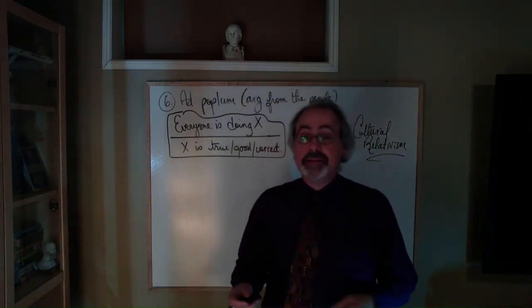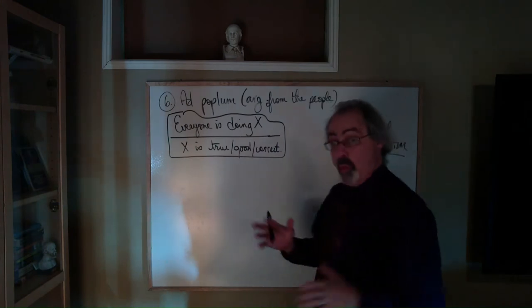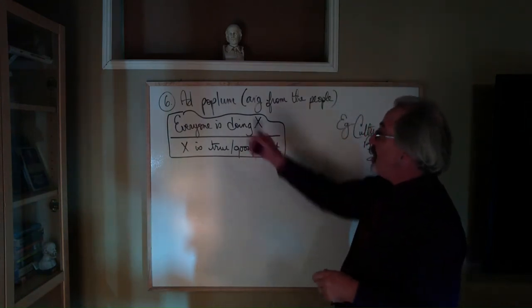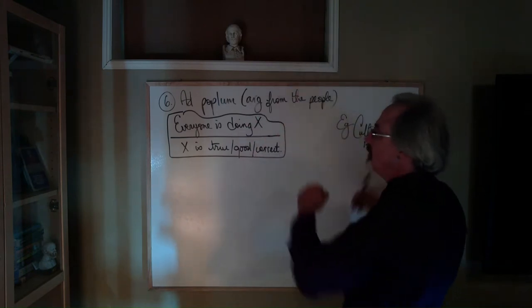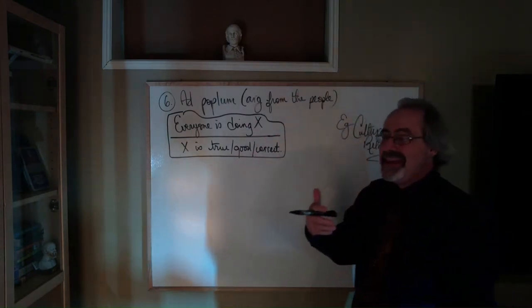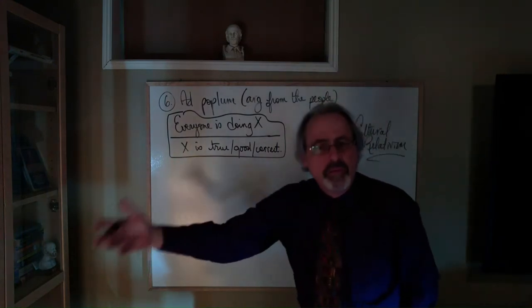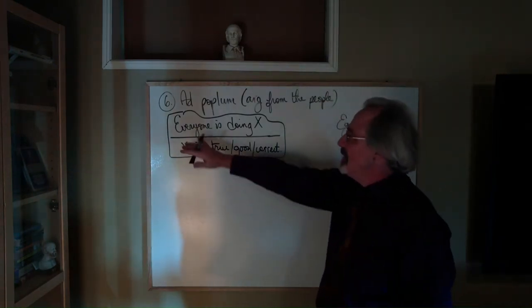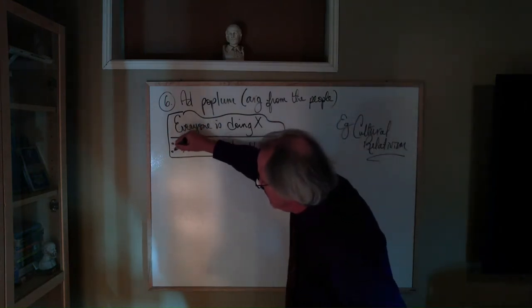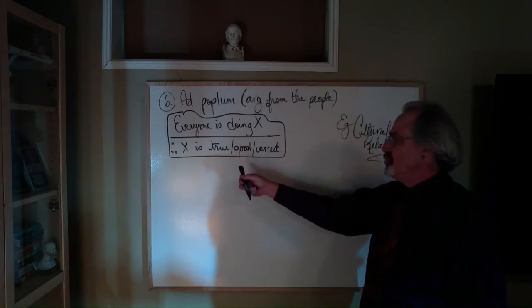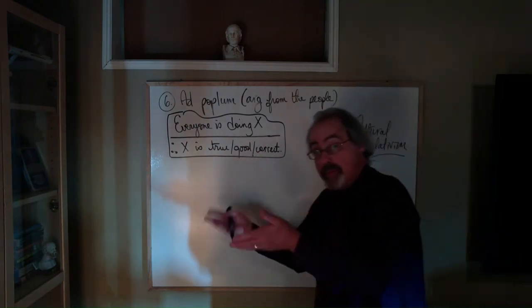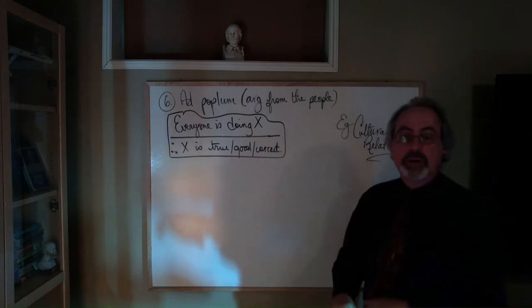Our sixth fallacy is quite a common one: ad populum, the argument from the people. In other words, it is really taking something like a variety of people, everyone is doing something, and then moving from that to therefore X is true or good or correct. So this is an argument from the basis of what people are doing.